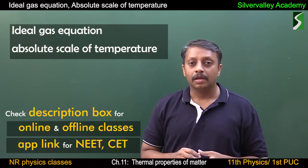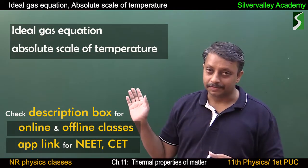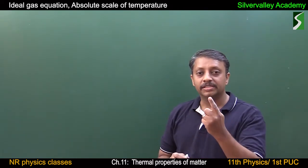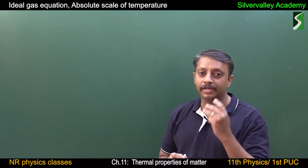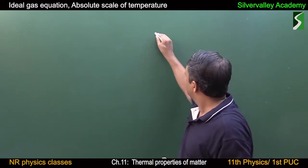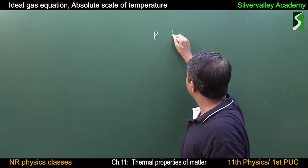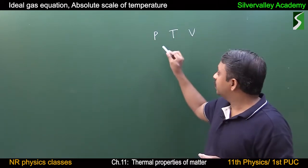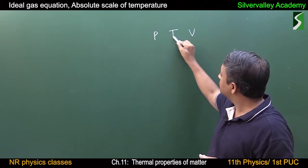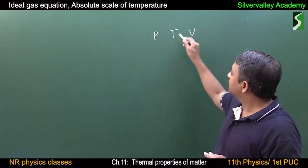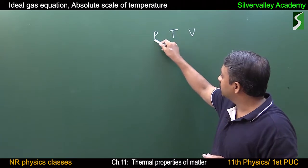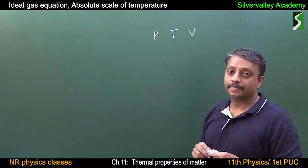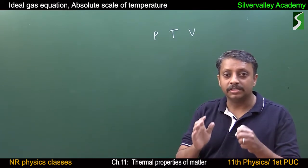Ideal gas equation and absolute scale of temperature. In the case of gases, pressure, volume, and temperature are interdependent. If you try to change pressure, temperature also changes and volume also changes. If you try to change temperature and see how pressure changes, simultaneously volume will also be changing. So it is difficult to study all three together.